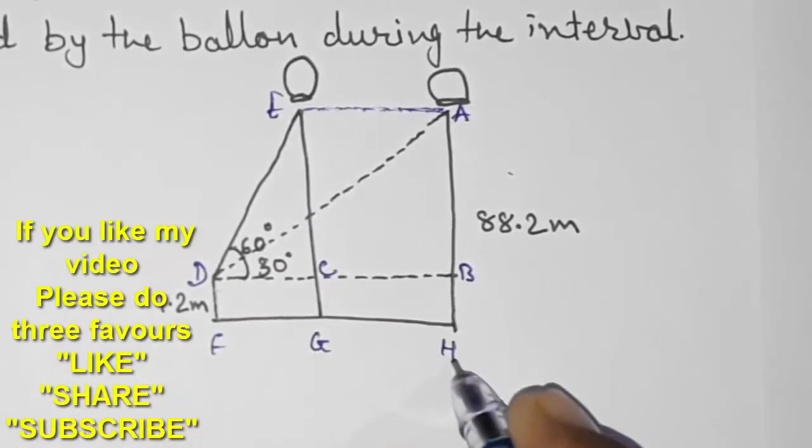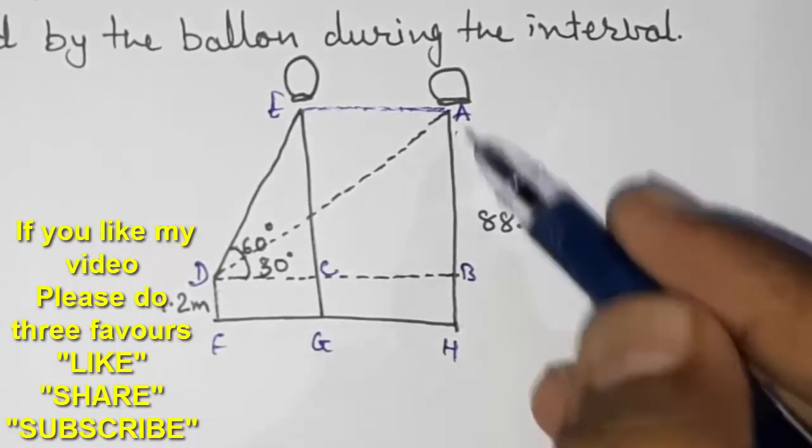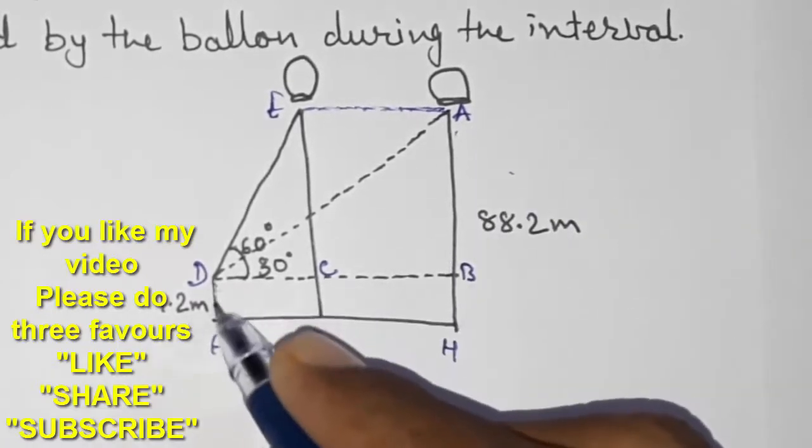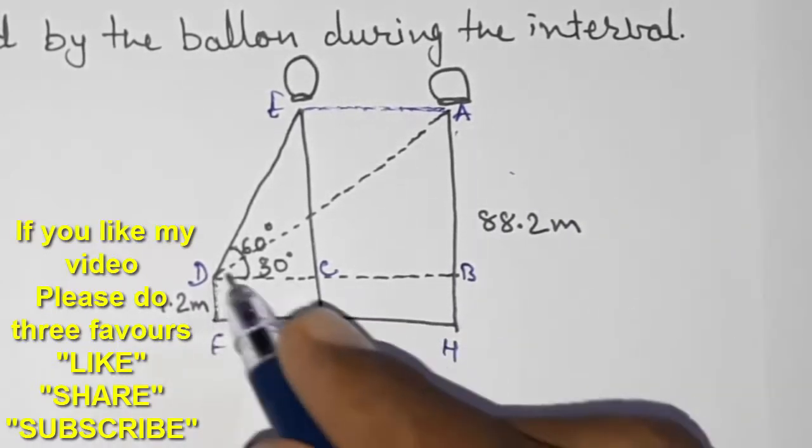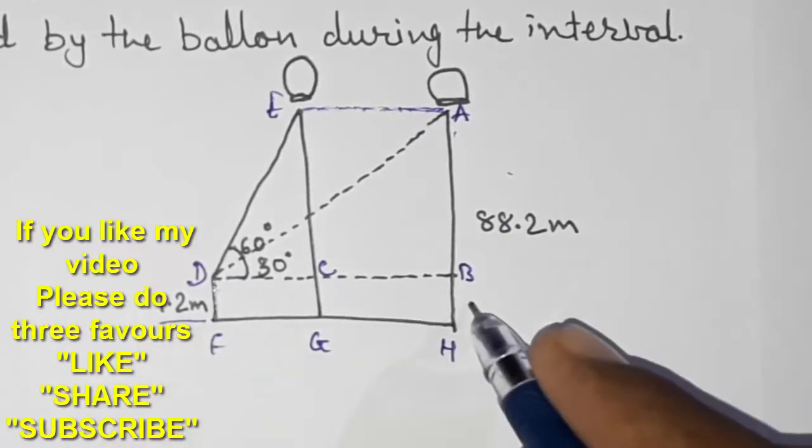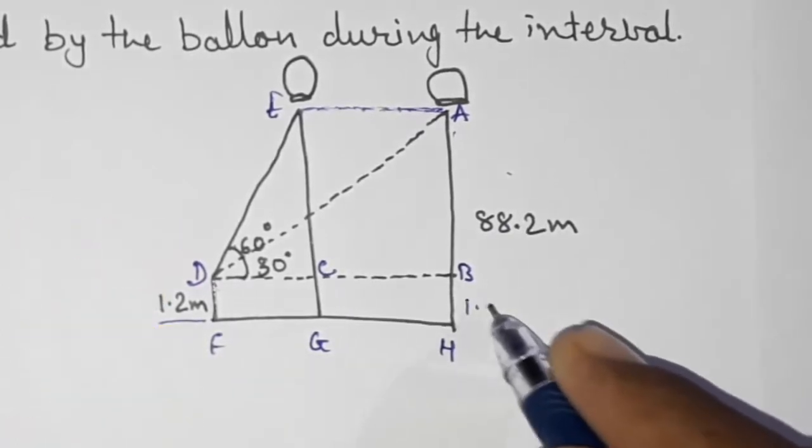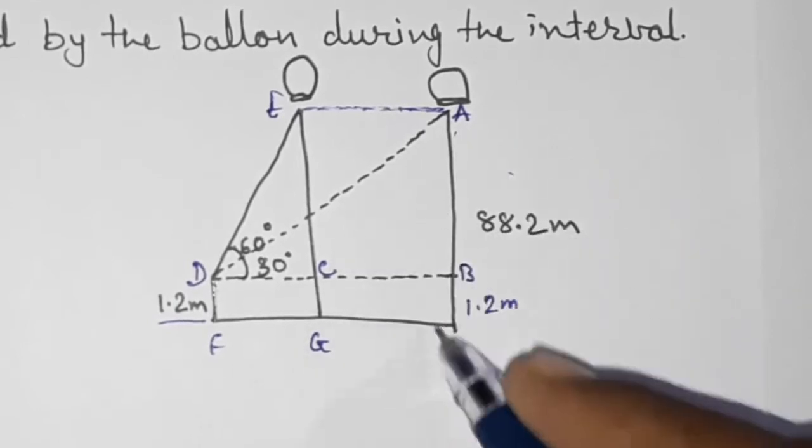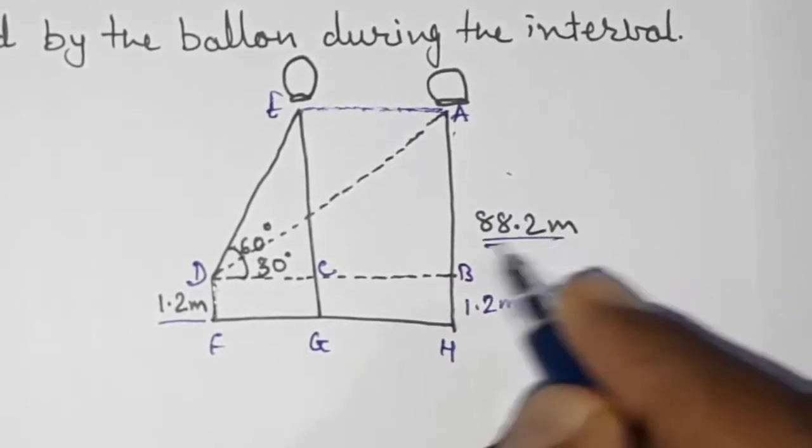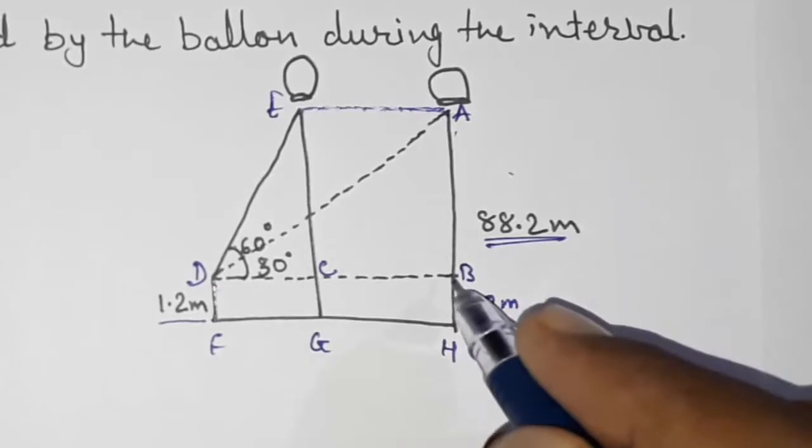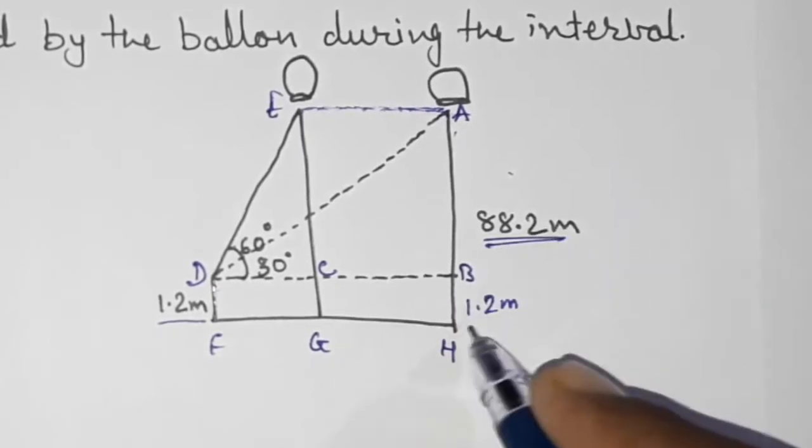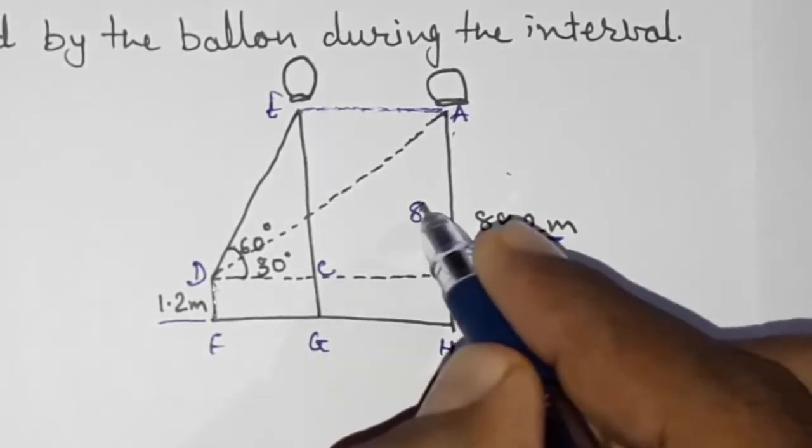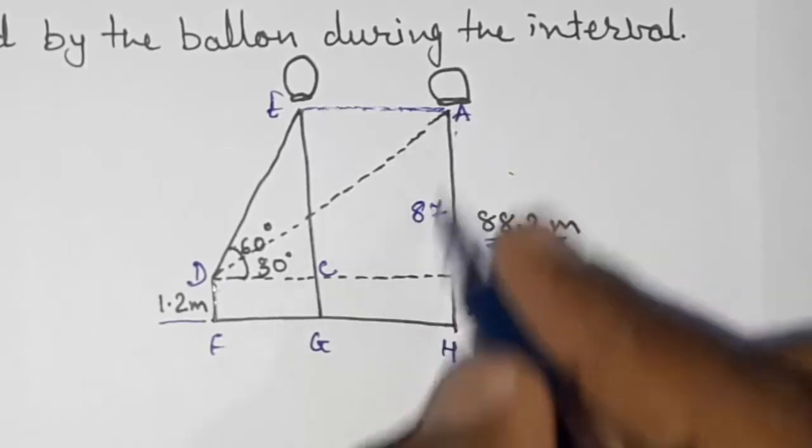These are also other points, if you want to give them names you can give it F, G, H. We want only this AB because height of the girl is also there, so this is DF is 1.2, so here BH will be also 1.2 meters. Now that this height of the balloon from the ground is 88.2, so this AB will be 88.2 minus 1.2 equals 87.